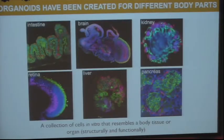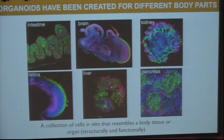This is part of a larger story — organoids have been created recently for a variety of body parts, including brain, intestine, eye, pancreas, and liver. The underlying definition for all of these is that they are a collection of cells in vitro that resembles a body tissue or organ, ideally both structurally and functionally. This is really a new field for cell biology.